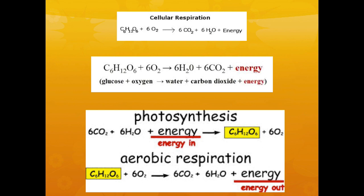Another very common test question is the difference between photosynthesis and aerobic respiration. The two formulas are basically the opposites. For photosynthesis, you have 6 carbon dioxide, 6 water, and energy on the reactant side, and the products are glucose and 6 oxygens. Aerobic respiration is basically the opposite — the reactants and products are just swapped. It's important to know these two chemical equations for the AP Bio exam.